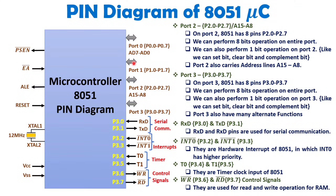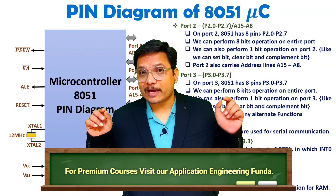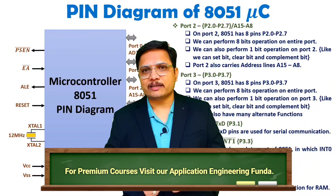Only Port 1 is used purely as a normal IO port; all other ports have multiple functionalities. In total, the 8051 has 40 pins, and by assigning multiple functions to the same ports — address/data lines, IO, serial, interrupts, timers, and memory control signals — many hardware pins are saved. If you have any further queries, post them in the comment box. Thank you for watching.